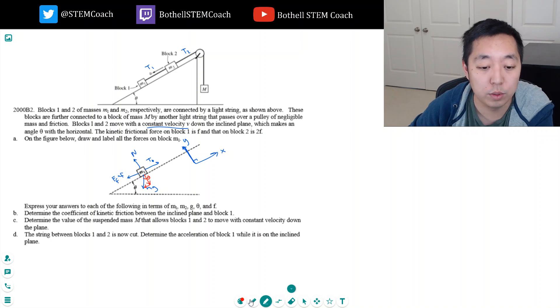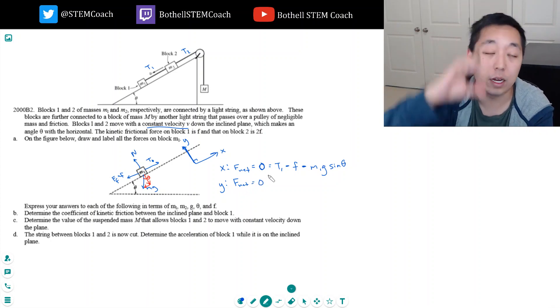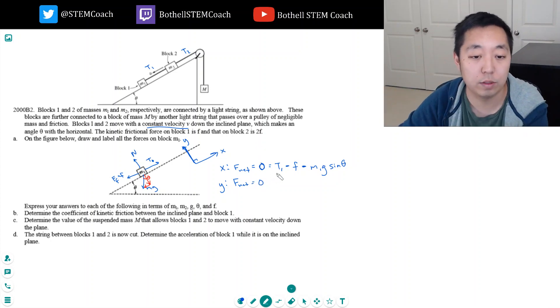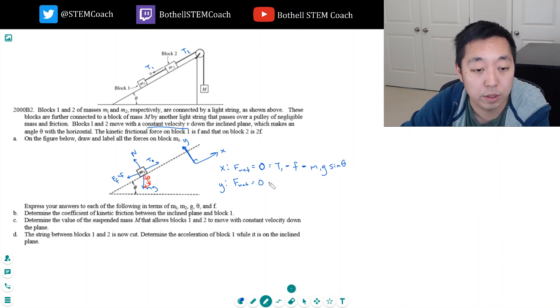So now we can do our net force equations here. So in the x direction, we know this is equal to zero because there's no acceleration in the x direction. It's moving at constant velocity. So let's see, I could do T1 minus force of friction, which is F, minus M1G in the x direction will be sine theta. And then in the y direction, the net force is also zero because it's not hopping off the plane in the vertical direction. It's only sliding along it. So again, in the y direction, the acceleration is zero. That's equal to normal minus M1G cosine theta.